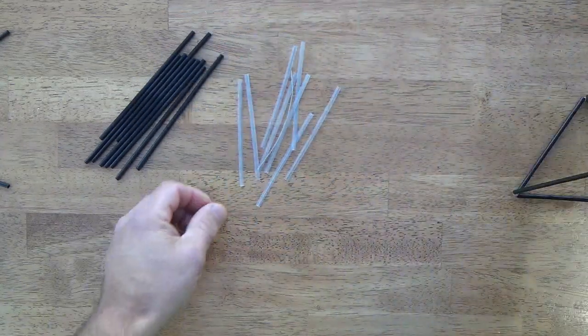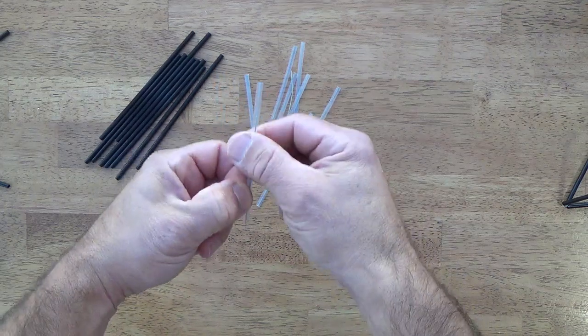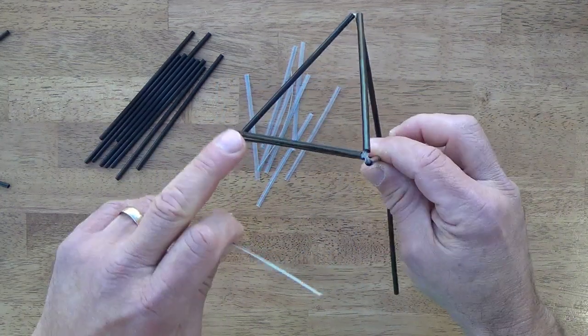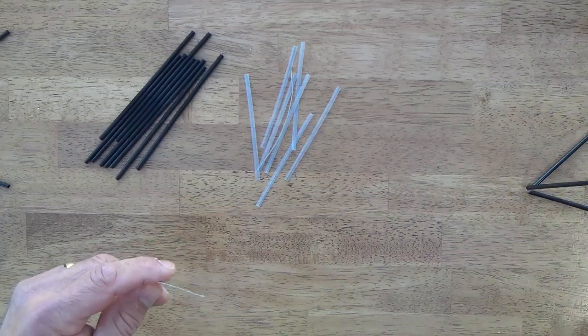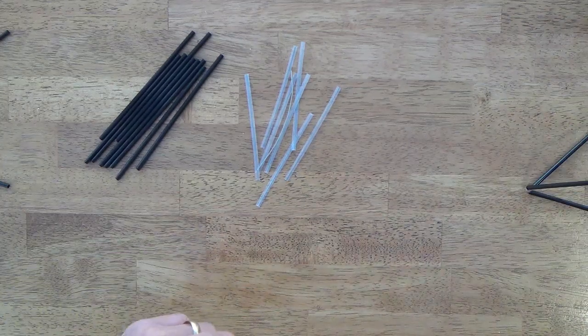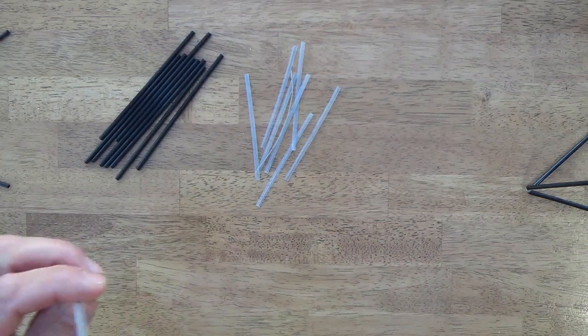Okay, so pretty easy to make a three-way juncture like we have here on the tetrahedron and like we have here on the cube. Those are three-way junctures.